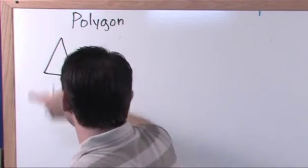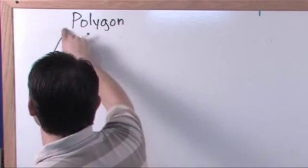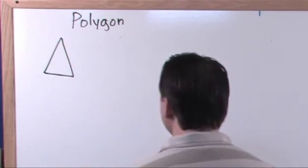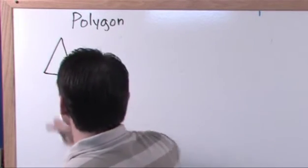So it's formed by line segments, formed by three of them. The line segments are called sides and they must intersect only at their end points, not in more than one place and there are no curved sides. So that's a polygon.